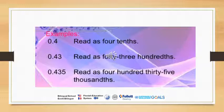In the second example, 0.43, we have two digits after the decimal point. Always count the number of digits from your right hand after the decimal point — here we have four and three, so two digits, two decimal places. That's why we read it as forty-three hundredths.